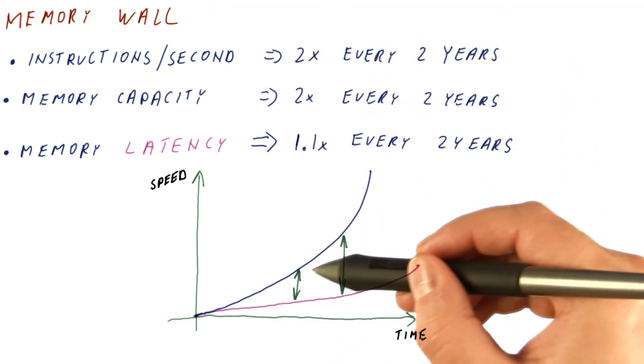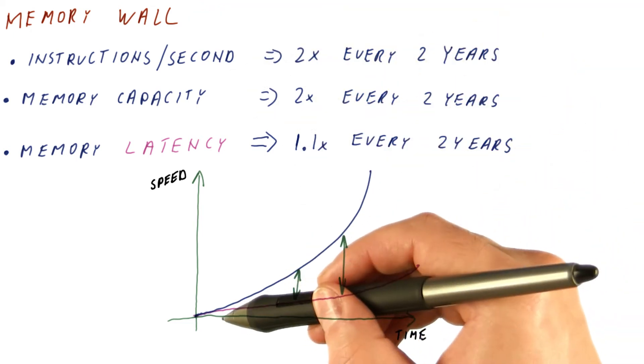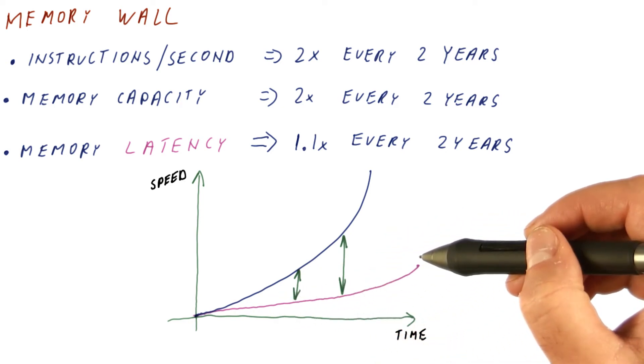Basically, our processors are getting a lot faster than memories are, yet they have to access memory every so many instructions.